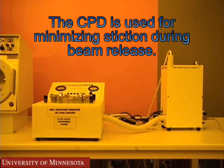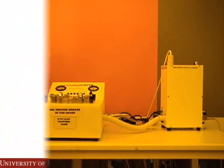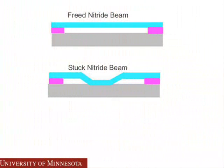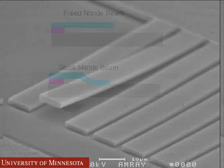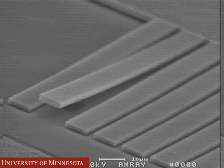The Critical Point Dryer, or CPD, is used in MEMS processing. During the beam release step, the CPD can be used to minimize stiction. Stiction is what happens when beams become stuck to the substrate. This occurs during the beam release step. Beams are attracted to the substrate by capillary forces, causing them to bend down and become stuck to the substrate. This is an example of some stuck and unstuck polybeams.